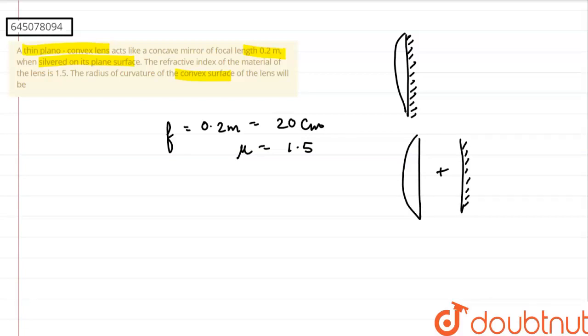We can simply write that focal length of this complete system is equal to 2 times the focal length of lens plus the focal length of the mirror. Now, because focal length of the mirror is infinite, 1 by fm turns to 0. So 1 by f is equal to 2 by f lens. f lens turns out to be 2 into the focal length given, that is 20 centimeters, or 40 centimeters.